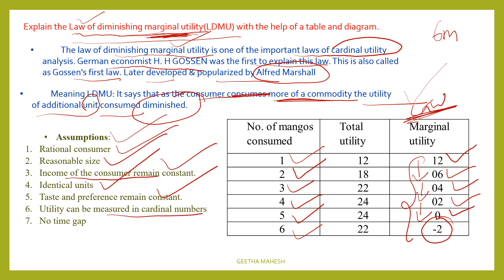Utility can be measured in cardinal numbers. Of course, utility is a psychological feeling, but we assume we can measure it. There must be no time gap — when the experiment is conducted, the consumption must be continuous without interruption.